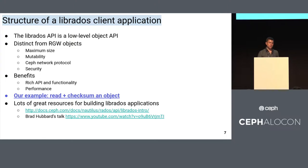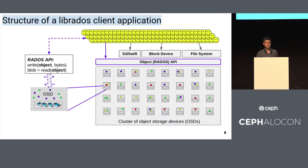The example we're going to build is one where a client reads an object and performs a checksum on it — not too complicated. When we talk about librados applications, we're talking about clients accessing the OSDs and the objects managed by those OSDs directly, instead of going through intermediate layers like RGW or RBD.